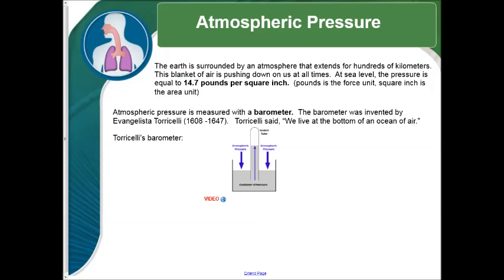Okay, that brings us to atmospheric pressure. The Earth is surrounded by an atmosphere that extends for hundreds of kilometers into space. This blanket of air is pushing down on us at all times. At sea level, the pressure is equal to 14.7 pounds per square inch, or we'll refer to from now on as PSI. This pressure is measured with a tool called a barometer. The barometer was invented by Evangelista Torricelli in the 1600s, and he famously said, we live at the bottom of an ocean of air.